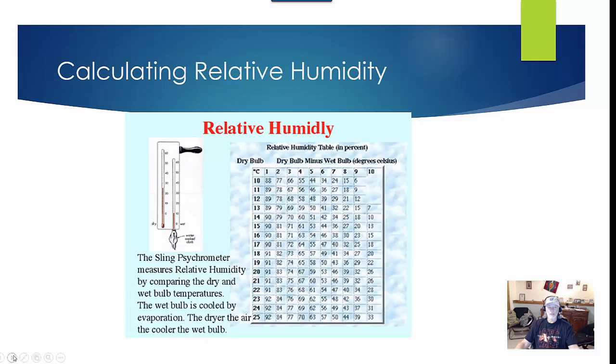You're going to need to calculate a relative humidity. We did a couple different activities on that with a sling psychrometer. Essentially you're going to get a table, and the dry bulb minus the wet bulb is across the x-axis, and then the dry bulb reading, and then you find the intersection point.